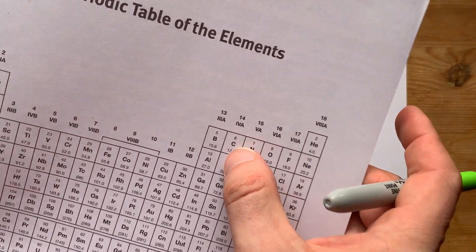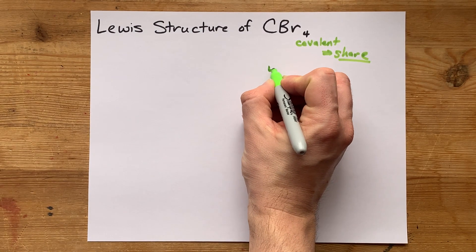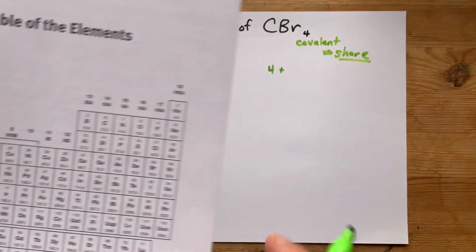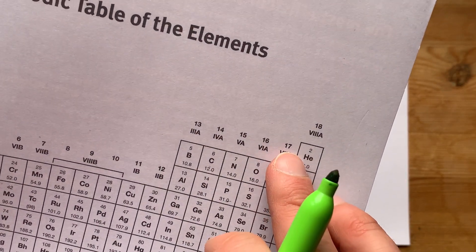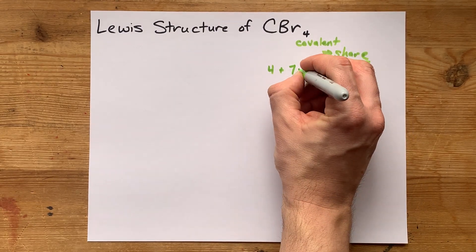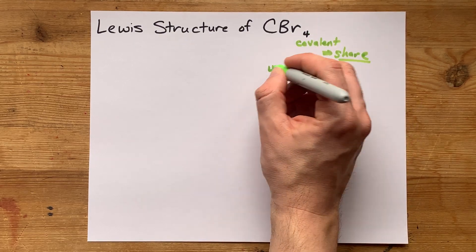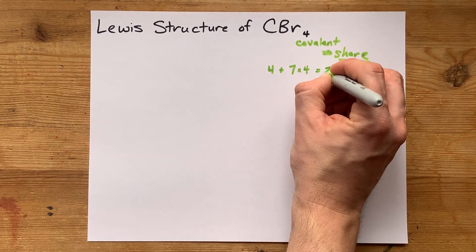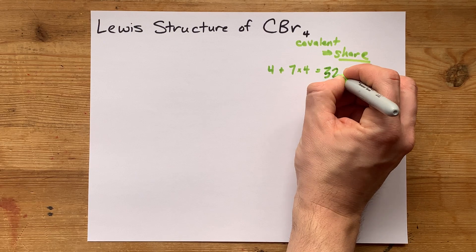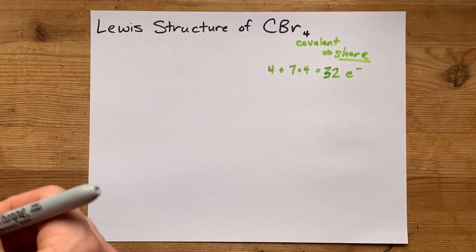Now let's see how many electrons we have. Carbon is in group 14, so it brings four valence electrons. Bromine is in group 17, which means they bring seven electrons each, but there are four of them. So seven times four is 28, plus carbon's four is, oh, I almost drew 28 there, but it's 32 electrons total that I need to deal with.